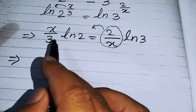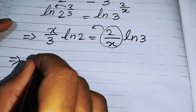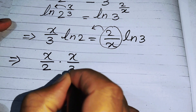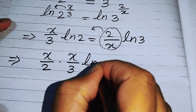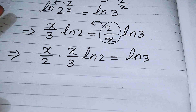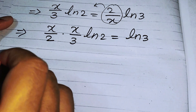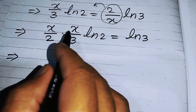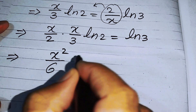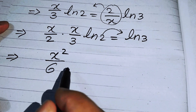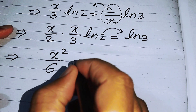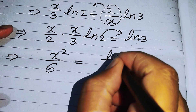When we take 2 over x to the left hand side it becomes x over 2, so we have x over 2 times x over 3 times log 2 equals log 3. We then multiply these two terms to get x squared over 6, and move log 2 to the right hand side — since it was multiplied, it becomes divided, giving log 3 over log 2.